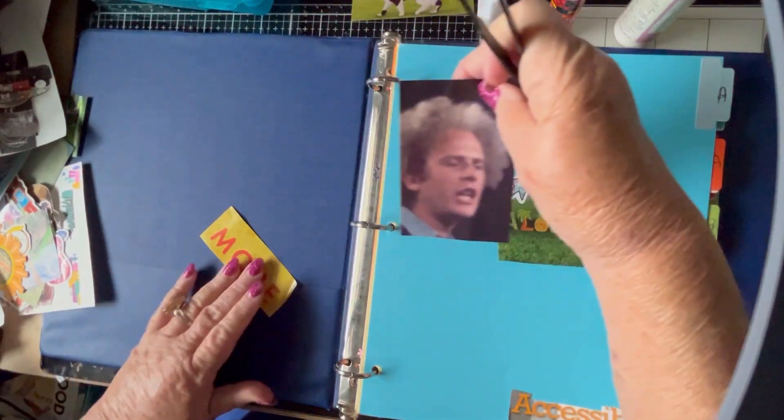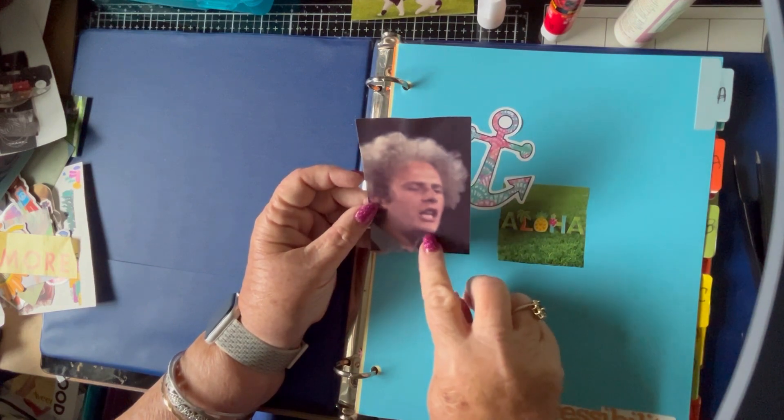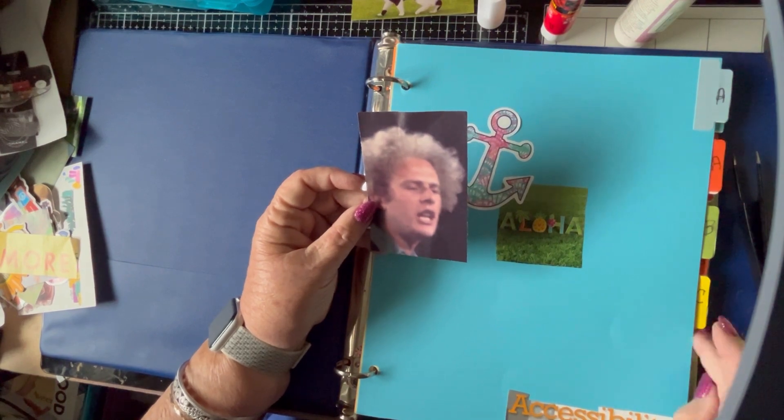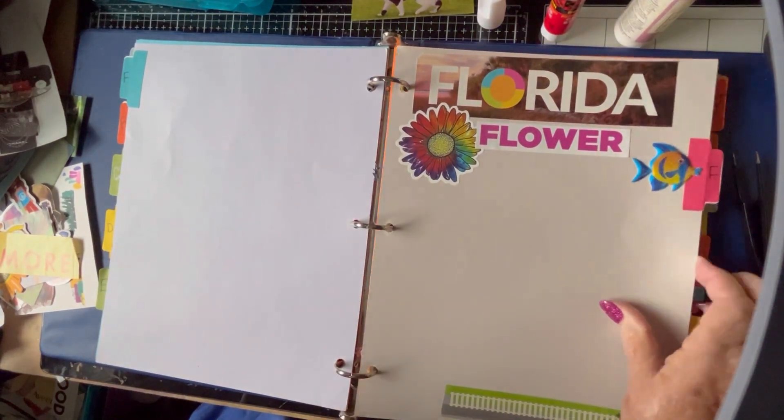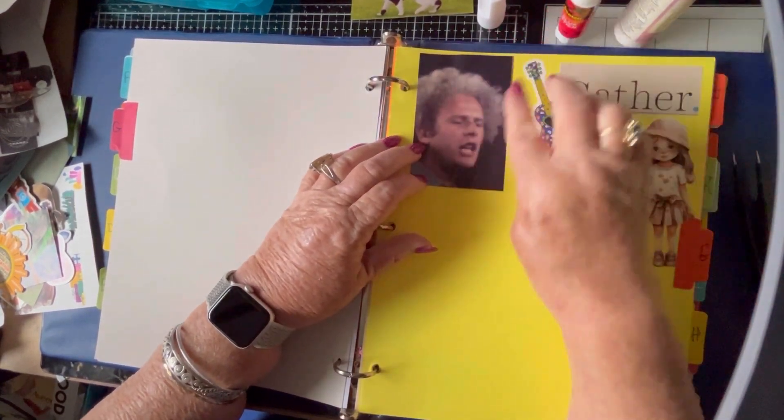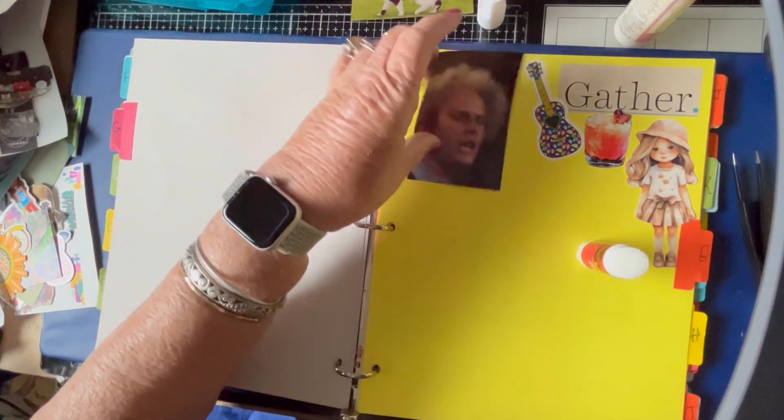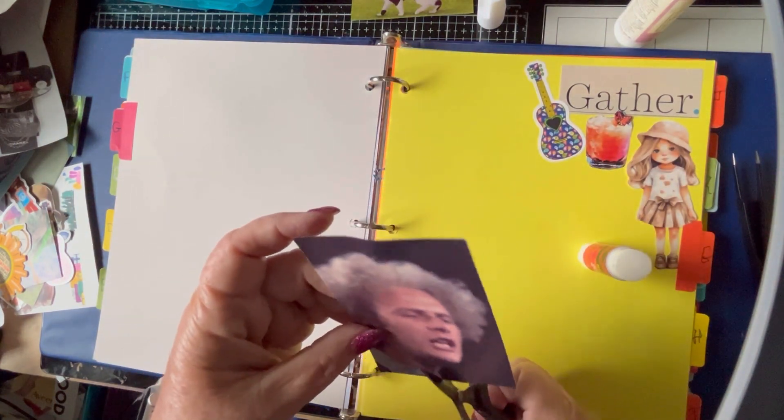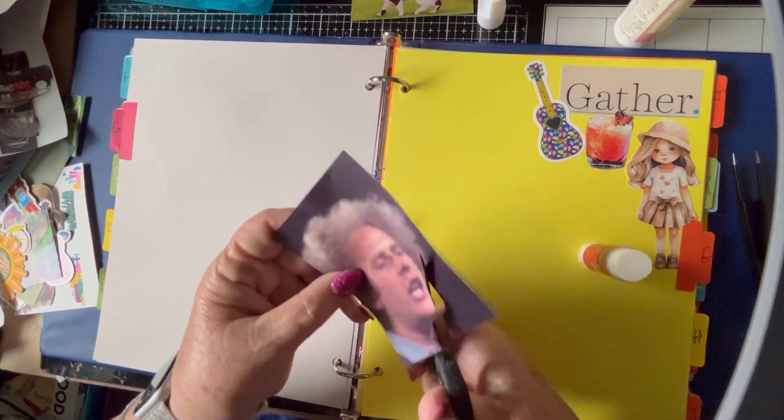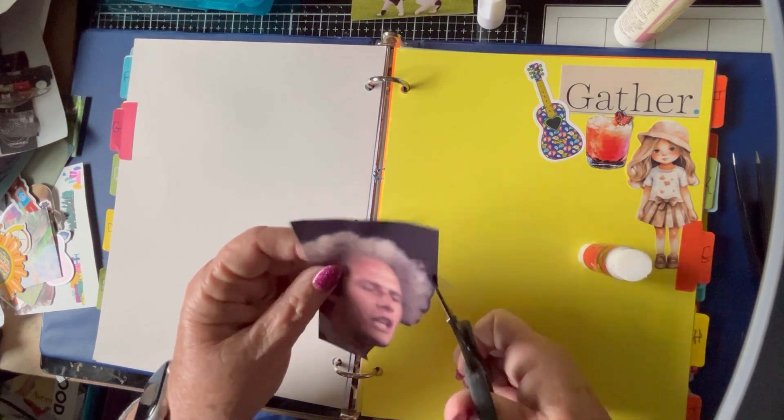And this is Garfunkel from Simon and Garfunkel. Art Garfunkel. So, I think I'm going to put him on the G's, since that was how he was known. Garfunkel. And that was the first album I ever bought. It was a Simon and Garfunkel album. I still play their music all the time and I find it extremely relaxing. I was able to play some of their songs on my guitar when I was in college and I still love their music.